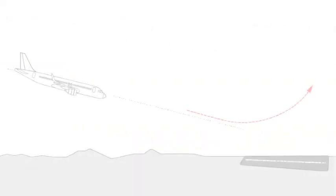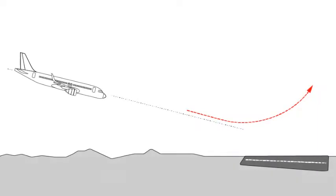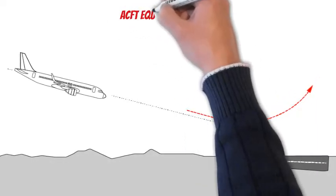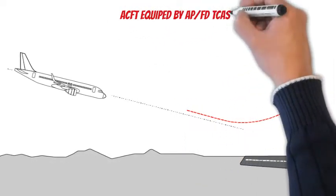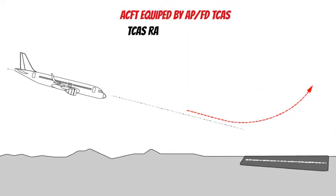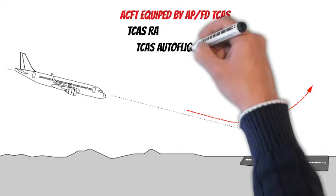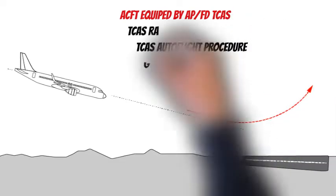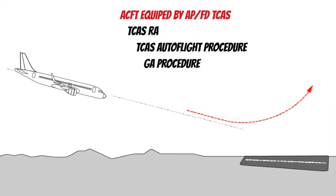If any climb oral alert sounds during the final approach, the flight crew should first apply the Autopilot Flight Directors TCAS procedure. When clear of conflict, they can consider a go-around depending on the situation.